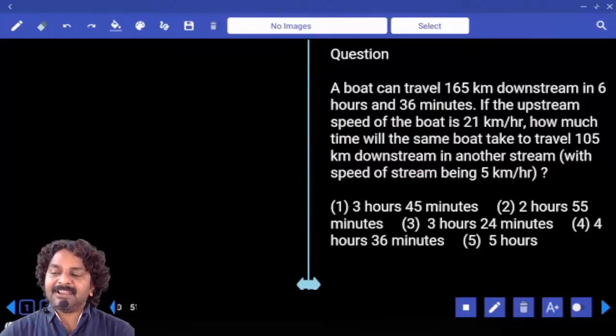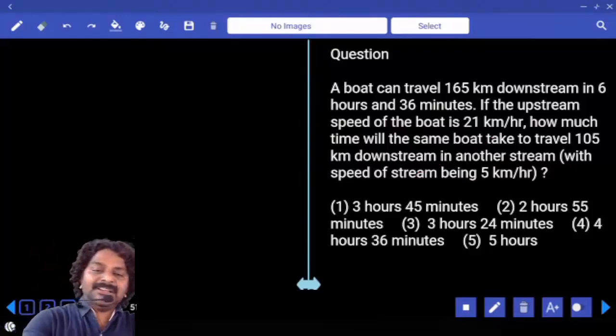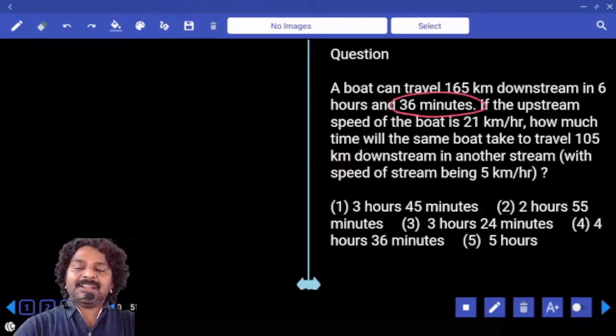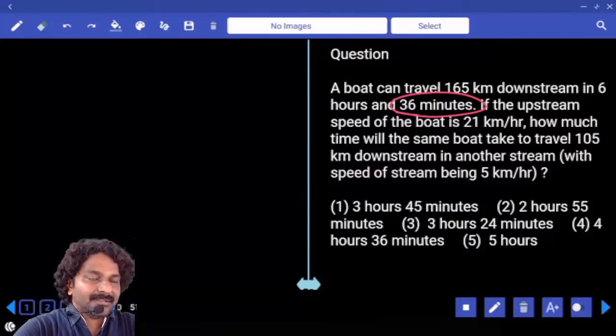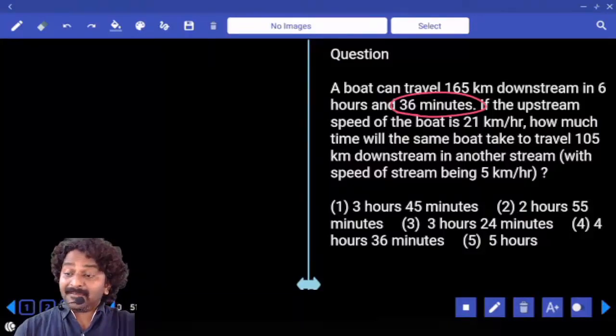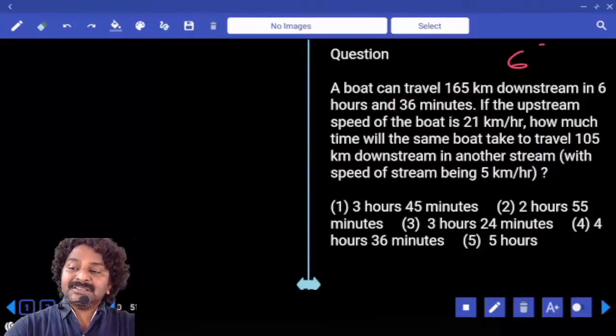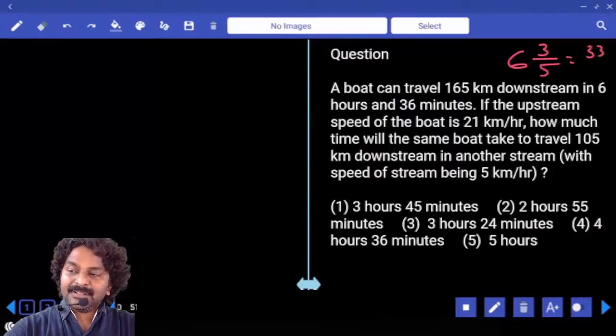A boat can travel 165 kilometers downstream in 6 hours, 36 minutes. Convert 36 minutes to hours: 36 by 60, which equals 3 by 5. So total time is 6 and 3 by 5. How much is this? 33 by 5.